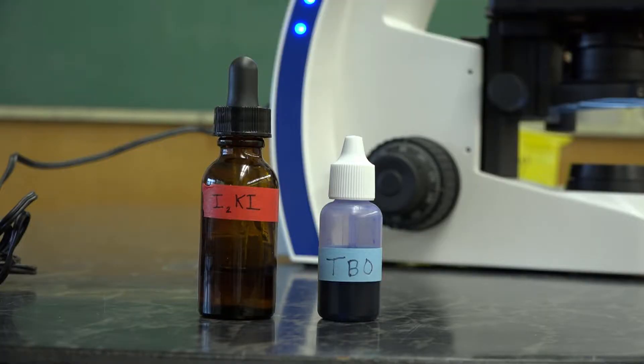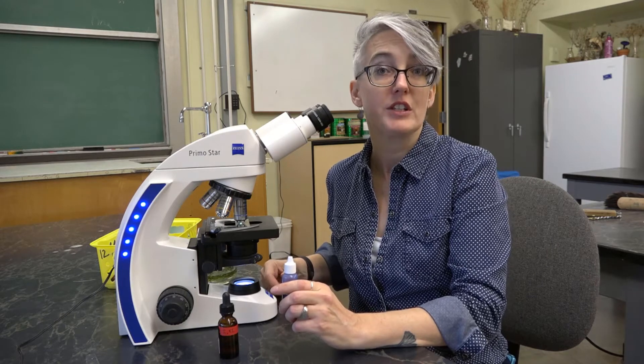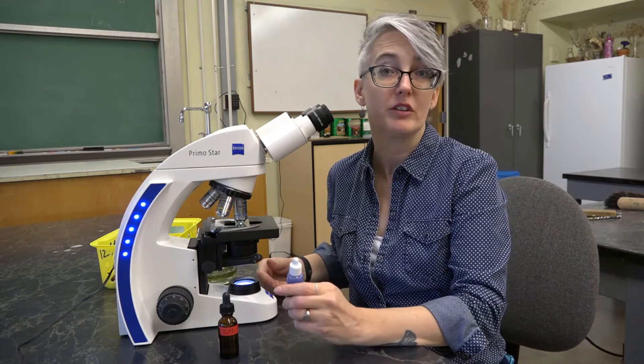Iodine potassium iodide is great for detecting starch. TBO is a great general-purpose plant stain. It's metachromatic, so it's going to stain different tissues different colors based on the binding sites.